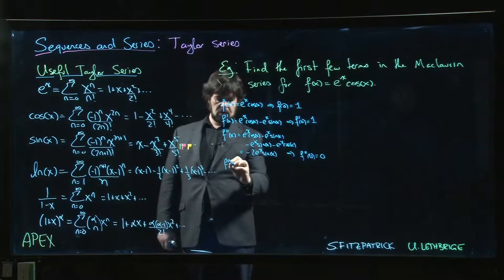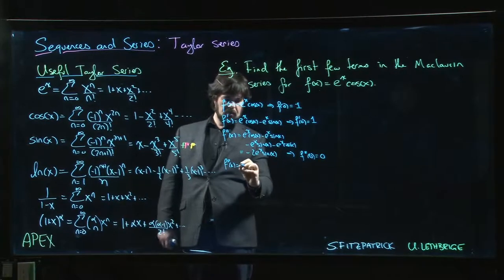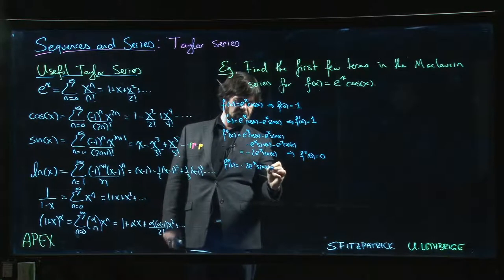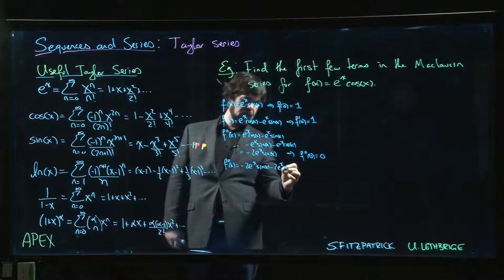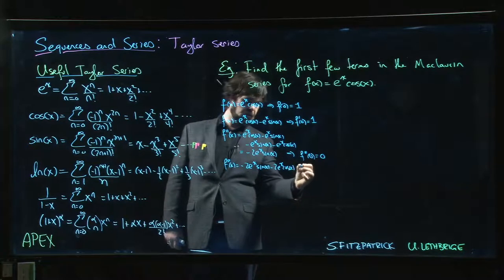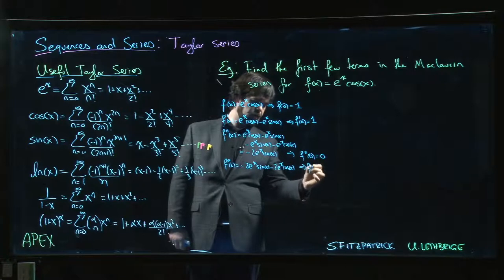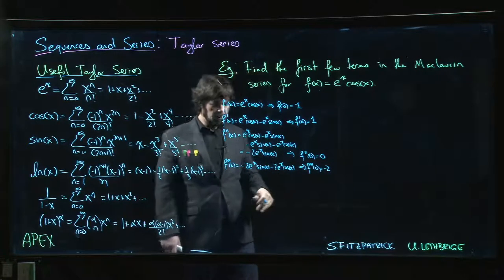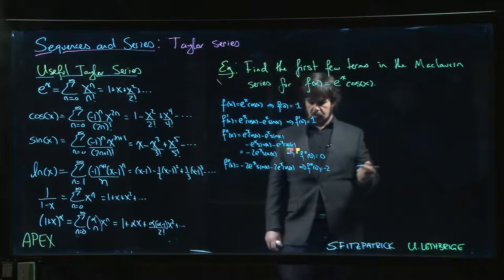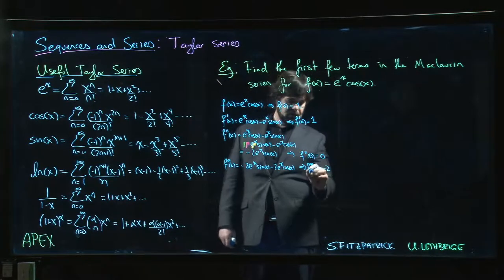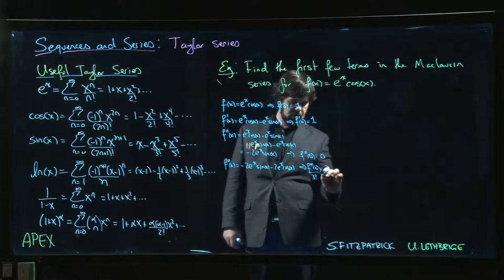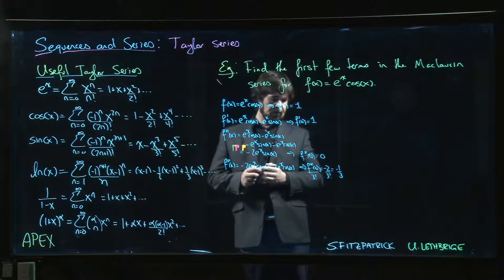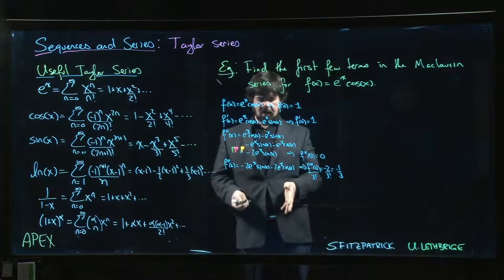And then you go on, third derivative, so we're going to get minus 2 e to the x sin x, minus 2 e to the x cos x. And so the third derivative at 0 is minus 2, and we can carry on from there. And so, of course, if we're dividing 3 factorial, 3 factorial, so we get minus 1 third, we could keep going, right?